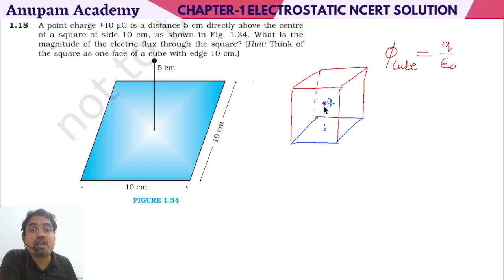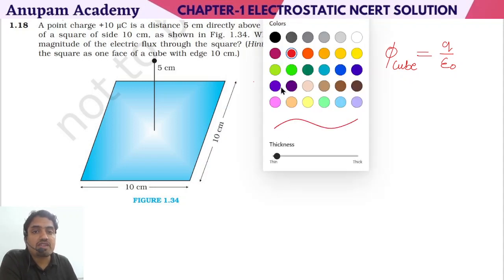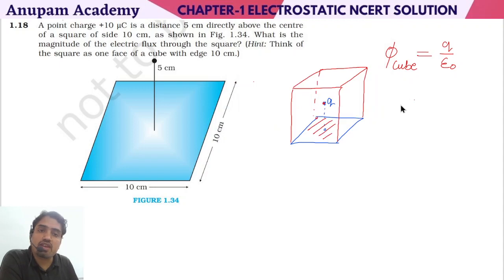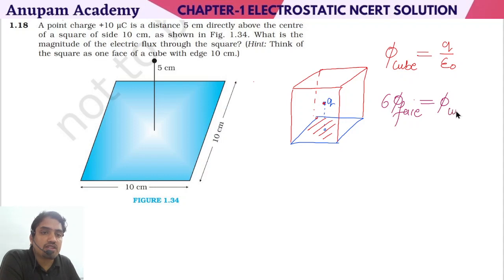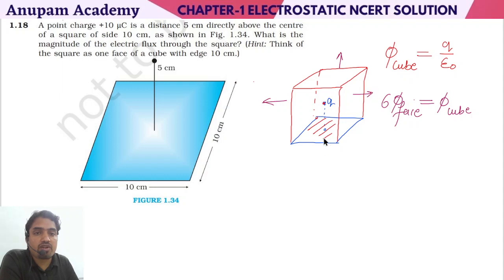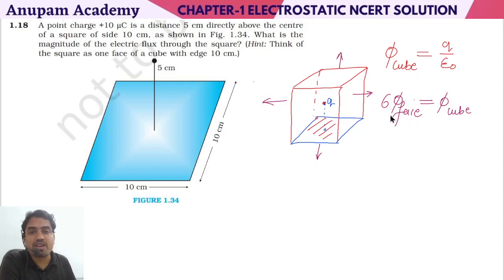So if we have a charge here, the total flux passing through the cube equals Q by epsilon naught. The cube has six faces, so the total flux is six times the flux through a single face. We can apply symmetry when the charge is kept at the center.